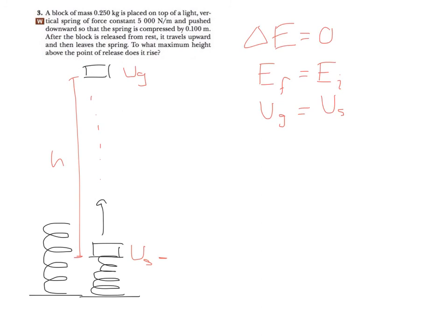Alright, so for UG, we'll have MGH. For elastic potential energy, one half kx squared. If you're not sure what goes where, 0.1 meters is, well, that's a distance. That's not the height, though. You're trying to solve for the height. So that's going to be your compression. It was pushed downwards, 0.1 meters.